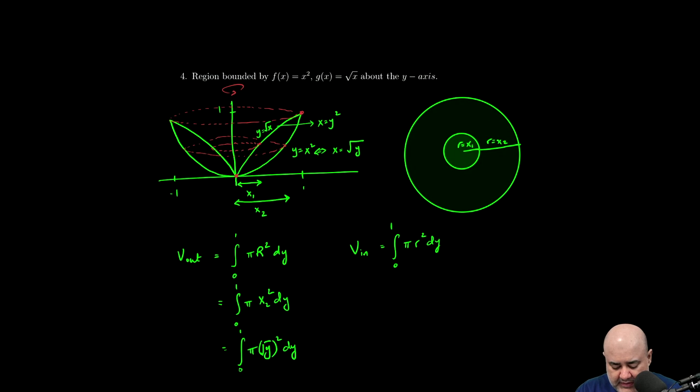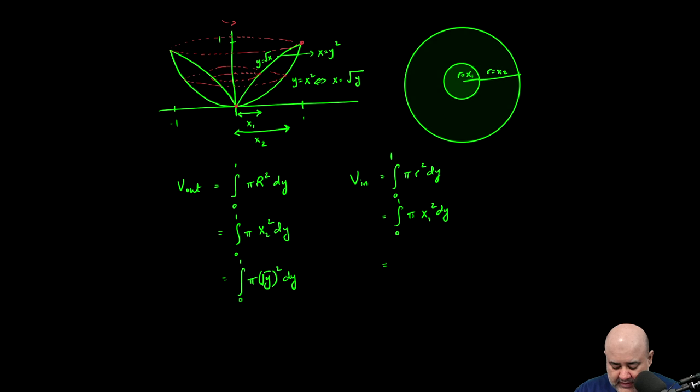The little radius would be the distance from here to here, or the distance from here to here. And if I know what the y value is at this point, I can figure out the x value by solving the equation for x. So this would be the same as the integral from zero to one of pi times x sub one squared with respect to y. And then x sub one is the same as y squared with respect to y.